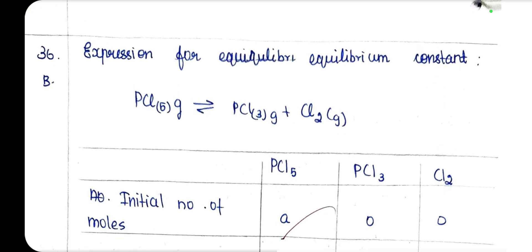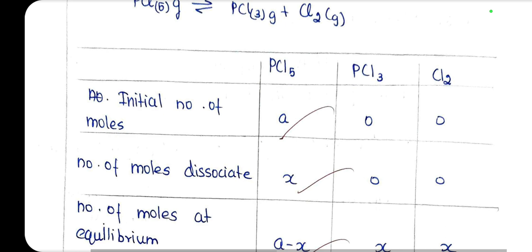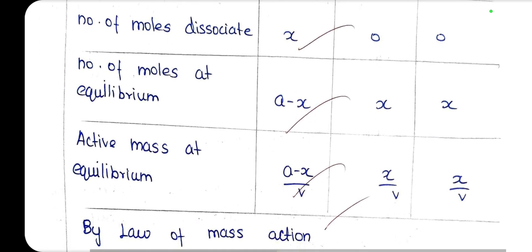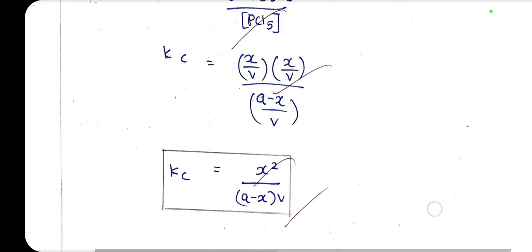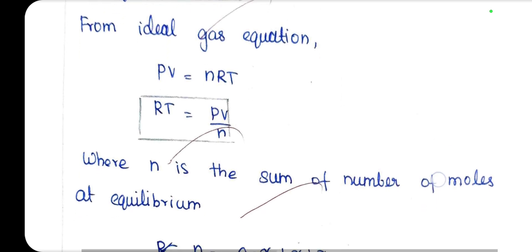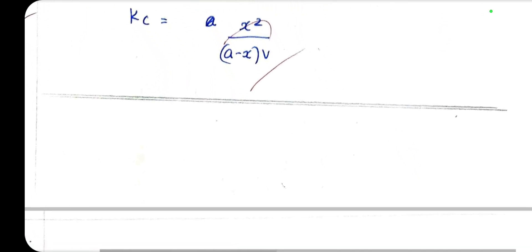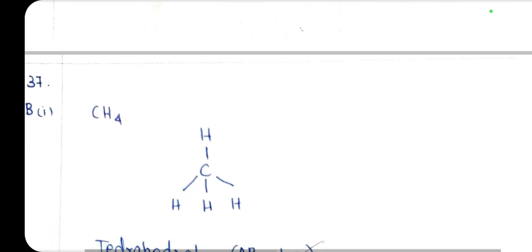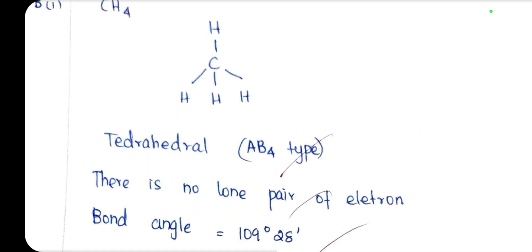The expression for the equilibrium constant: PCl5 undergoes decomposition into PCl3 and Cl2. Both KC and KP expressions are derived for this reaction.